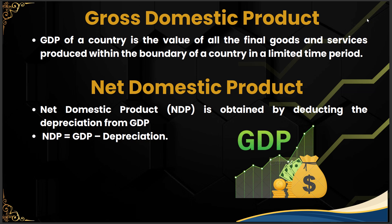Looking in more detail: GDP at market price is the market value of all the final goods and services produced within the domestic territory of a country within one financial year. Since it is at market price, it includes indirect taxes and excludes subsidies. GDP at factor cost, on the other hand, excludes indirect taxes but includes subsidies — the same distinction we saw with respect to market price and factor cost.